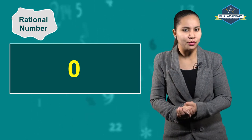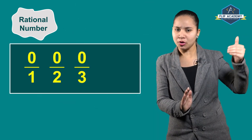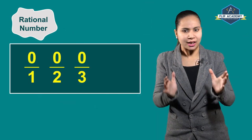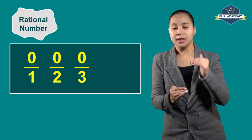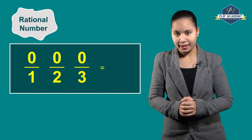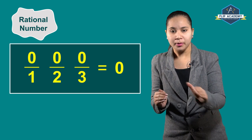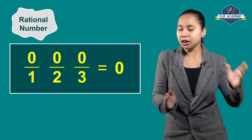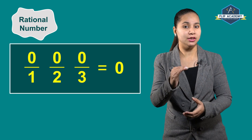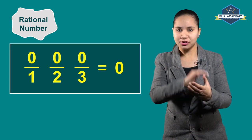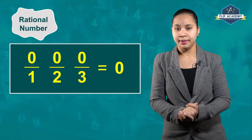Why is 0 a rational number? Because 0 can be written as 0/1, 0/2, 0/3 — when we divide 0 by any number, the answer is 0. Here the denominator, i.e. q, does not equal 0. And that is why 0 is a rational number.